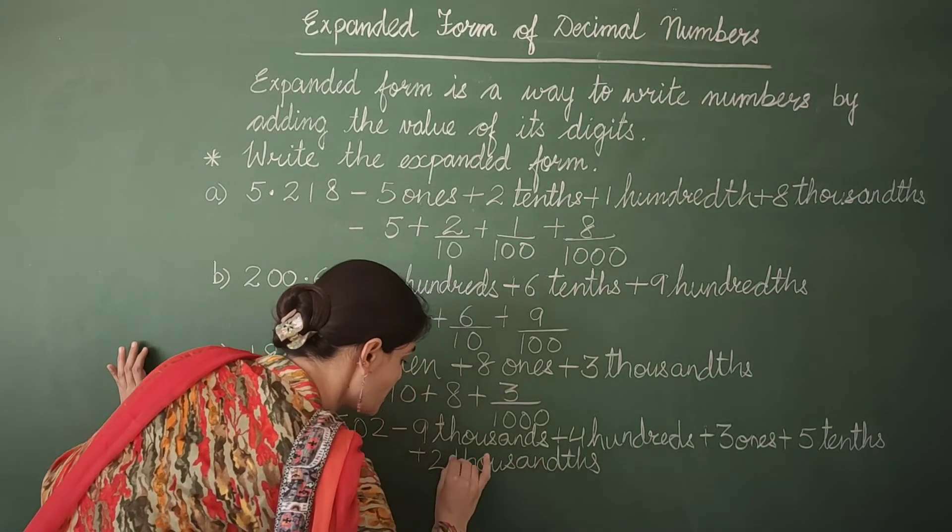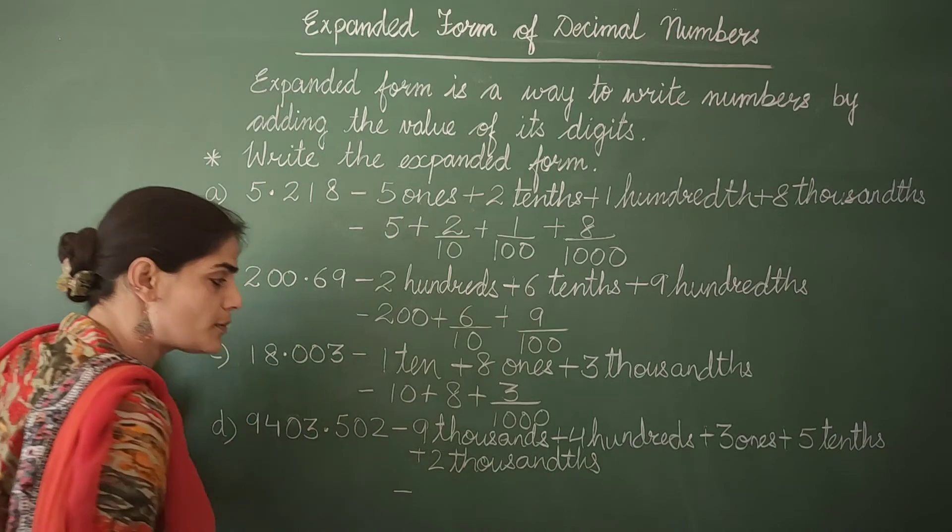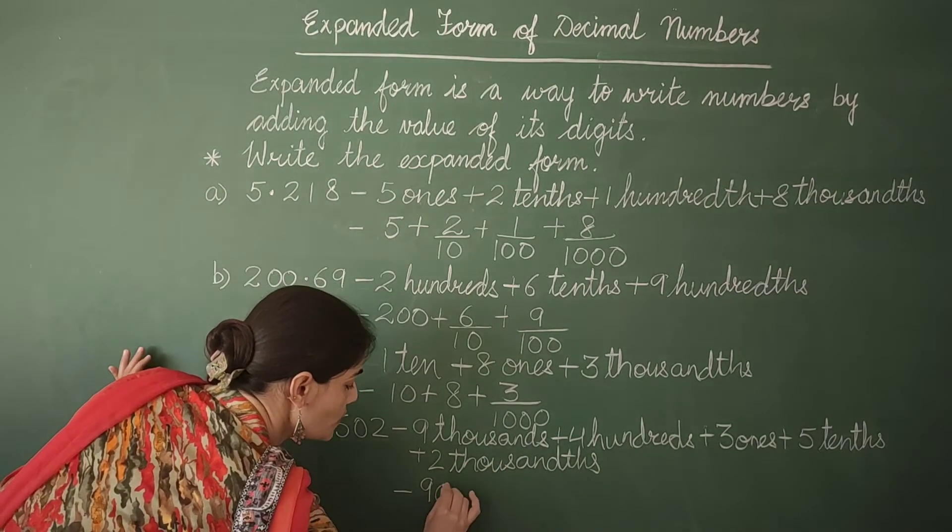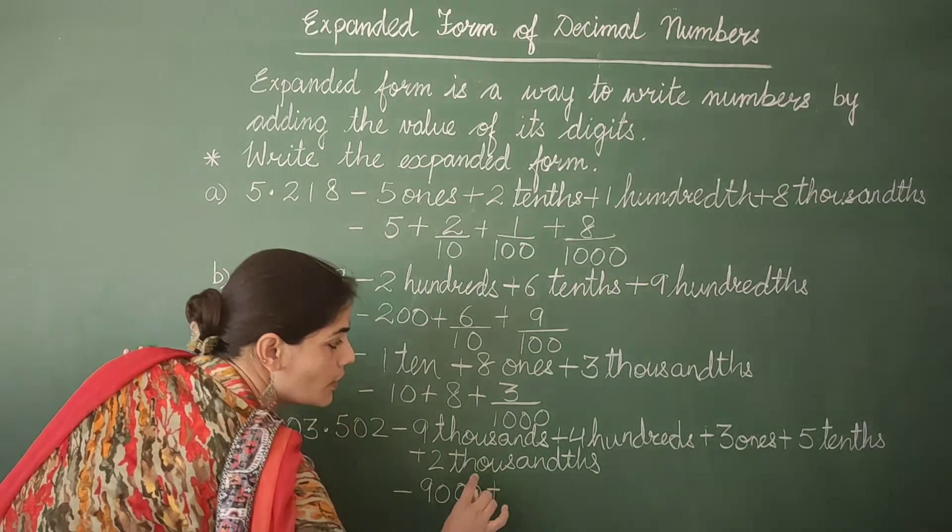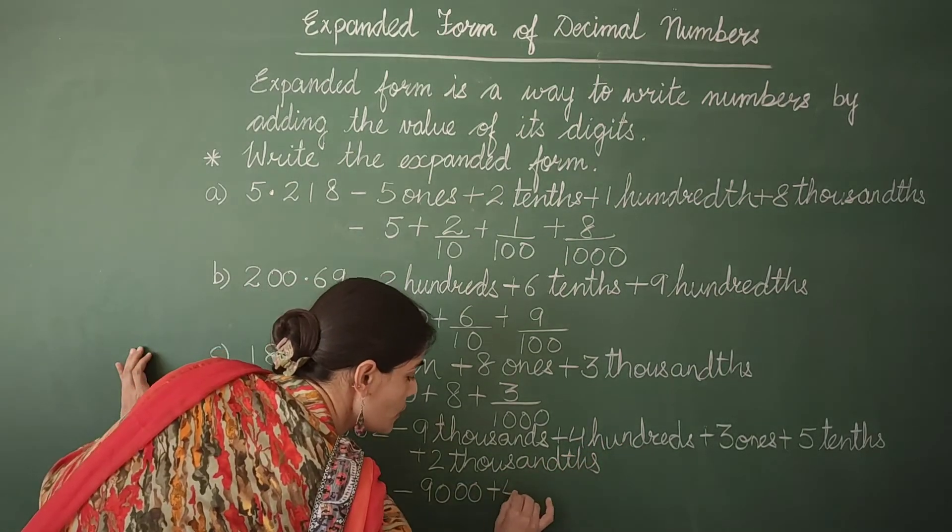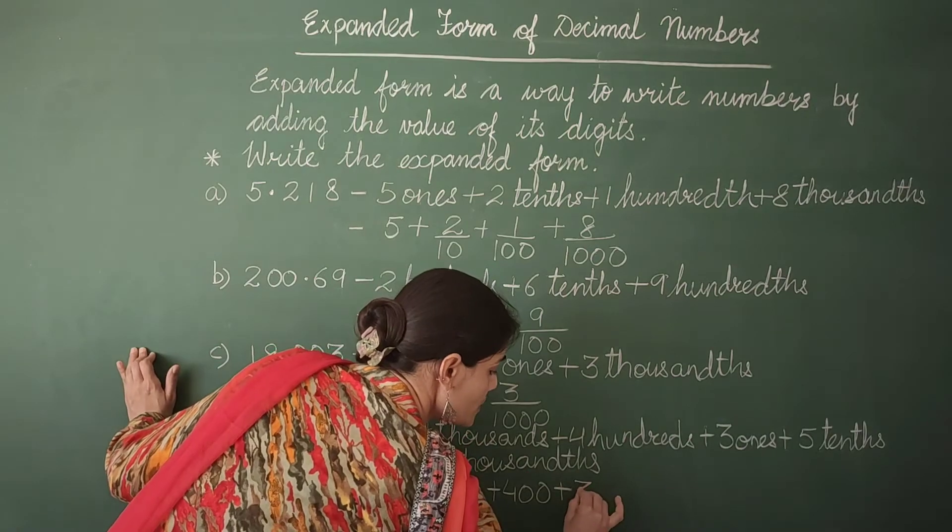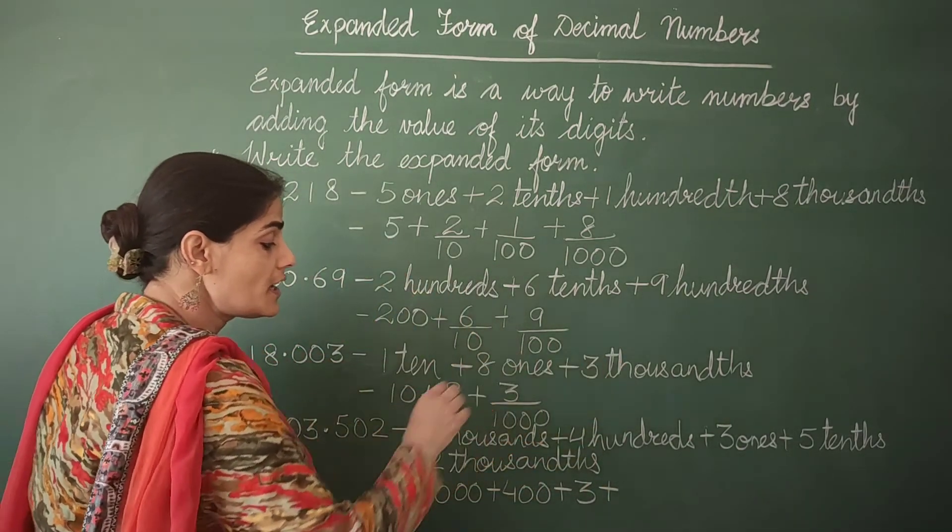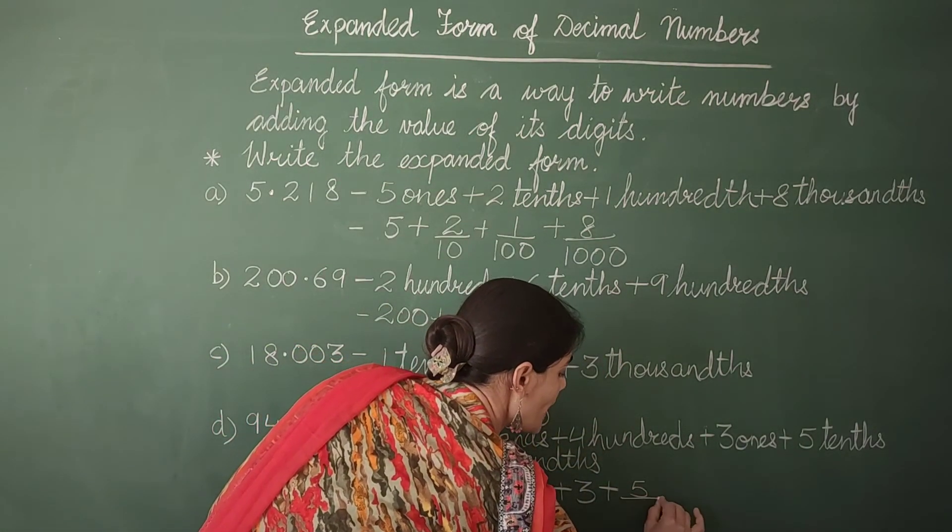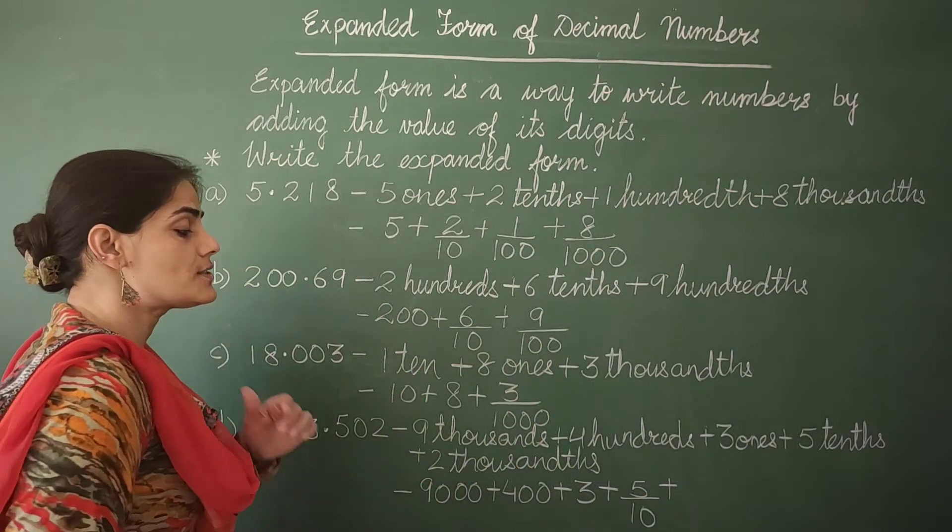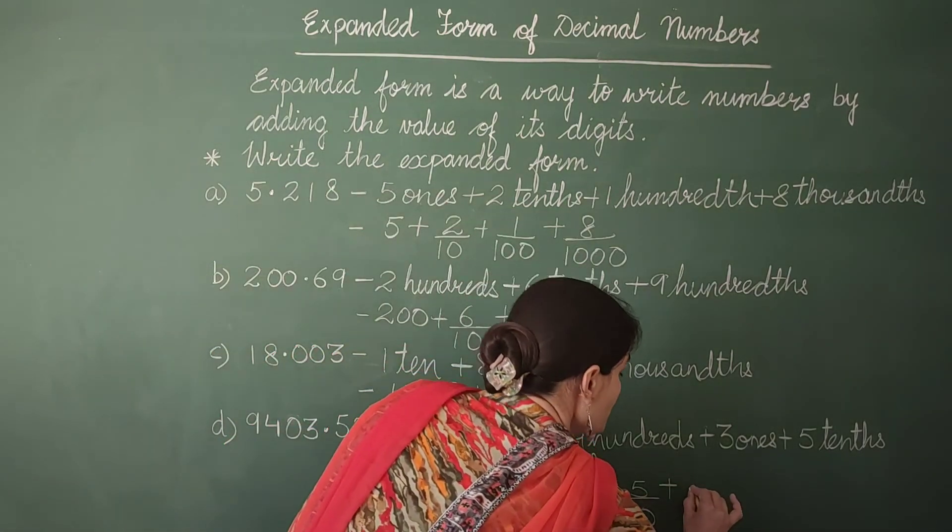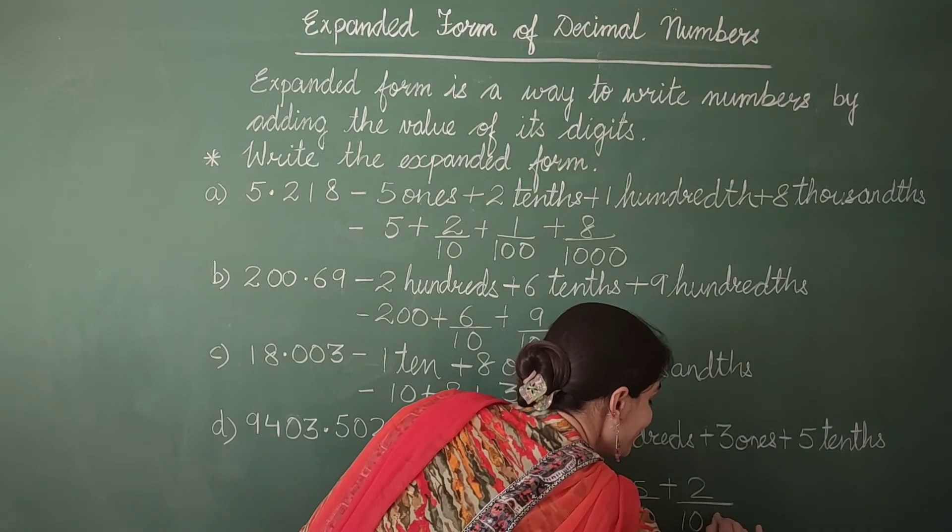Now let's express it in simple form everybody. 9 thousands is equal to 9000. 4 hundreds is equal to 400. 3 ones is equal to 3. 5 tenths is equal to 5 by 10. Then next is 2 thousandths. So 2 upon thousand.